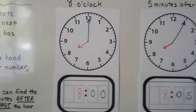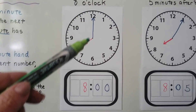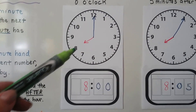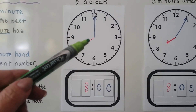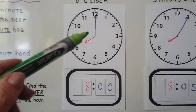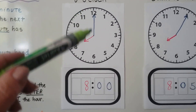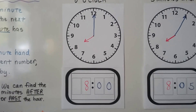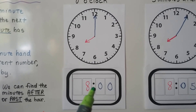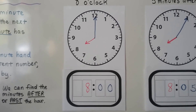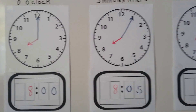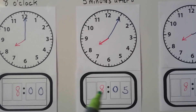When the minute hand is pointing to the 12 and the hour hand is pointing to a number, that's the o'clock. If it's pointing to the eight for the hour hand, this is eight o'clock. On an analog clock, the minute hand points to the 12 and the hour hand points to the eight. On a digital clock you'd see an eight, then a colon, and two zeros — that's eight o'clock. When it's five minutes after eight, it would be 8:05.